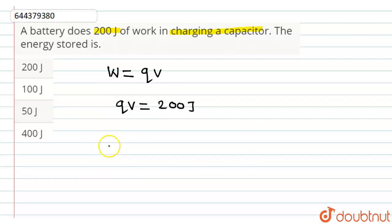Now we know that energy stored inside the capacitor is calculated by the formula 1 by 2 CV square. But we know that C into V is equal to Q. So putting this value it will be 1 by 2 Q into V.